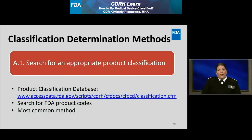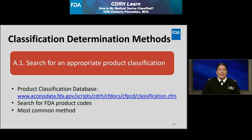The first method I recommend is to search directly for an appropriate product classification in the FDA's Public Product Classification Database. You can search this database to identify an appropriate FDA product code, which then allows you to review the regulatory requirements for that particular device type. This method is the most common and often used.